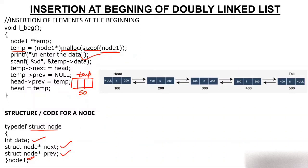Now I ask the user to enter data. Suppose the user enters 3, so we put 3 in temp's data part. Now we do connectivity. temp->next will be assigned head — whatever is in head, say 100, is placed in temp->next, so this new node starts pointing to the old first node. Since this new node will be the first node, there is no node behind it, so temp->previous will be null.